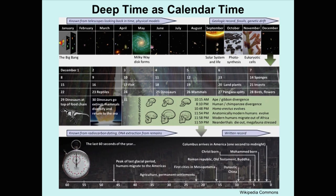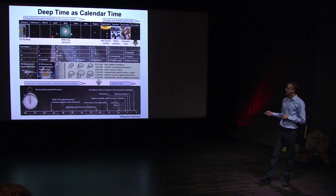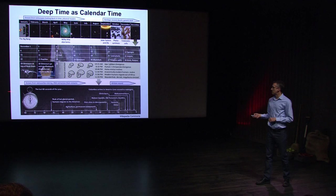In this example, the Big Bang starts off the year and the present ends the year. Earth forms in September, and then there's an explosion of time — you see the December calendar, where dinosaurs appear on Christmas and go extinct on December 30th. Human evolution happens in the last few hours of December 31st, and civilization appears during the last 60 seconds of the year.